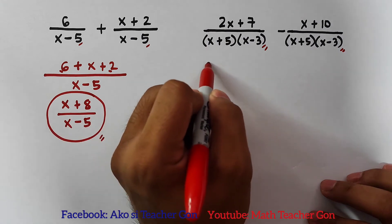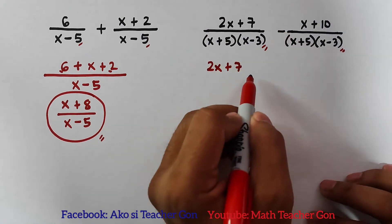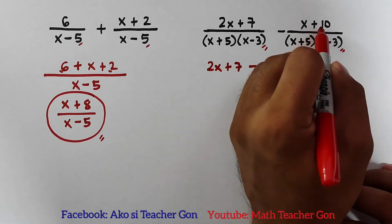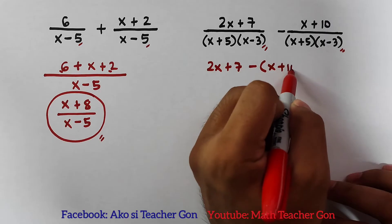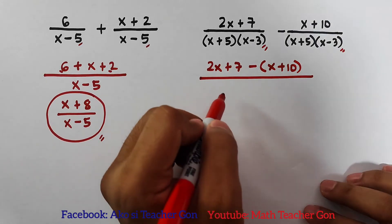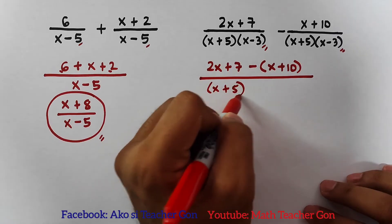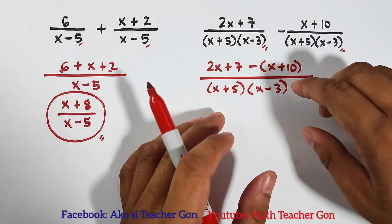And it goes like this: we have 2x plus 7 minus this numerator, enclose it by parenthesis, that is x plus 10, over its common denominator which is (x plus 5)(x minus 3).